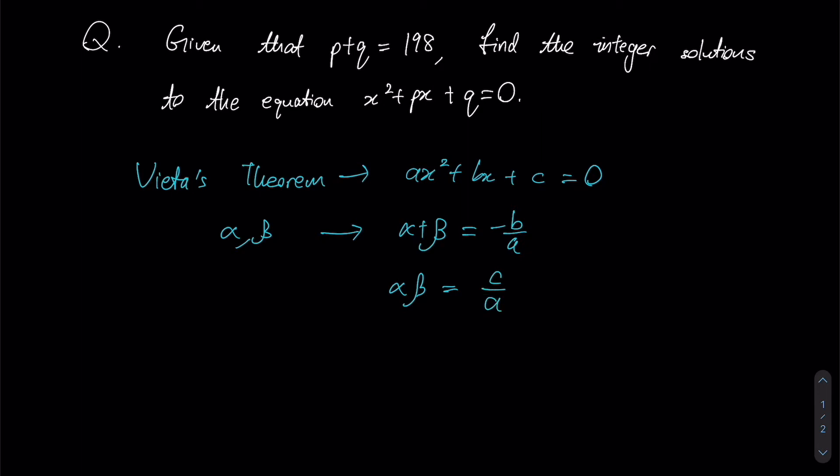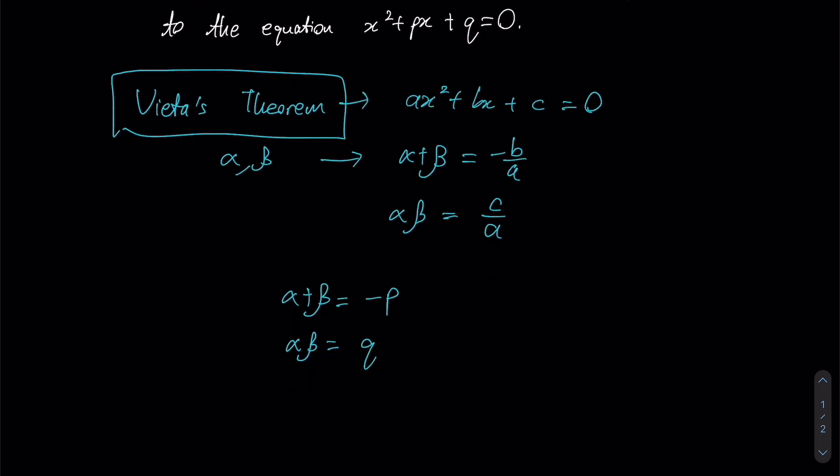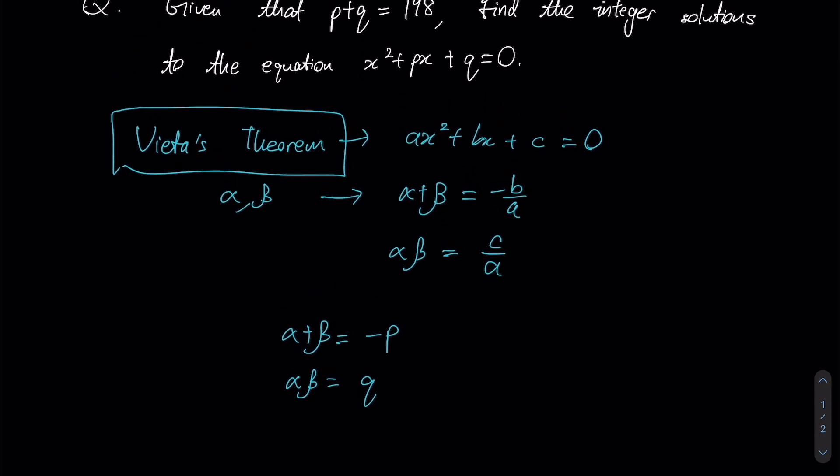Using Vieta's theorem and applying it to this question, this quadratic equation given to us is already of the general form, so no other manipulation or transformation is needed. Applying Vieta's theorem for this particular equation, my sum of roots α + β will be -p over 1, which is just -p, whereas my product of roots will be c/a, which is q/1, which gives me simply q.